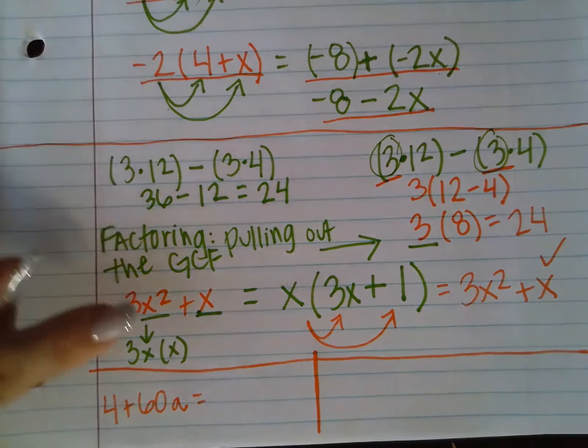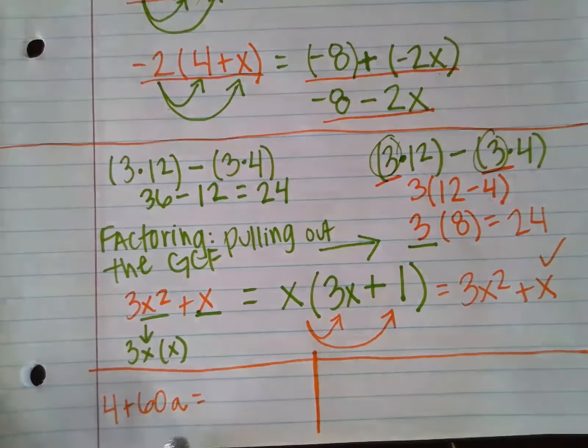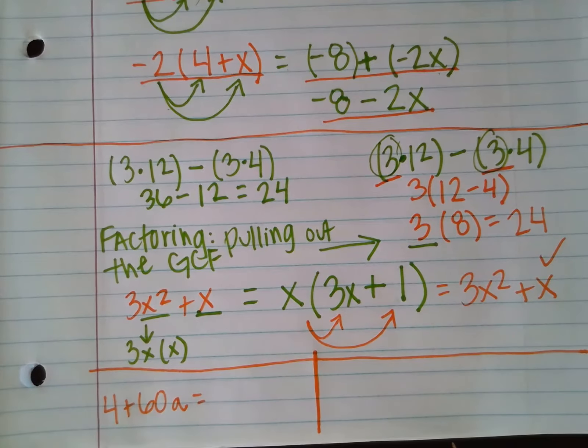Unlike the first example, they do not share a variable. A is only attached to 60. There's no 4A or any A over here with 4. So the next thing I'm going to do is look at the numbers, and I'm going to think, do 4 and 60 share any factors? Is there numbers that I can multiply to make 4 that I can also multiply with to make 60? And the answer is actually one of the numbers that's in the expression, 4. I can multiply 4 times something to make 4. I can multiply 4 times something to make 60.